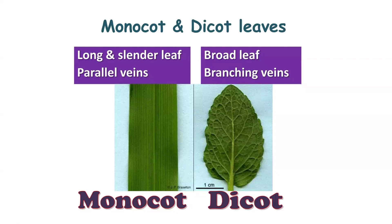In monocot leaves, the veins are parallel, whereas in dicot leaves, the veins form a reticulate network. Monocot leaves are long and slender with parallel venation, whereas dicot leaves are broad with branching veins forming a network — hence reticulate venation is seen in dicot leaves.